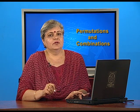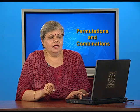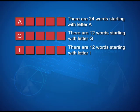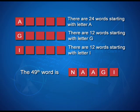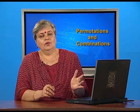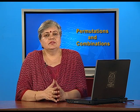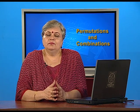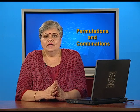The question was to find the 50th word. The 49th word starts with N, and arranging the remaining letters A, A, G, I alphabetically gives N-A-A-G-I. Therefore the 50th word is N-A-A-I-G, since the only remaining permutation swaps G and I. Note that throughout this problem, as in all these permutation cases, we are counting arrangements that may or may not form meaningful words.